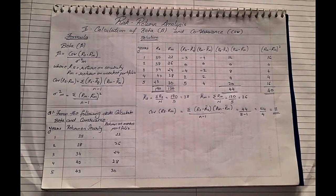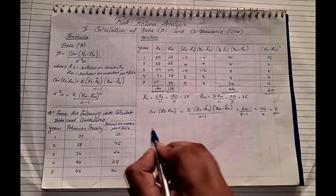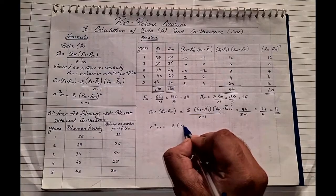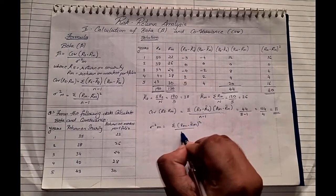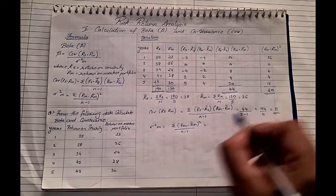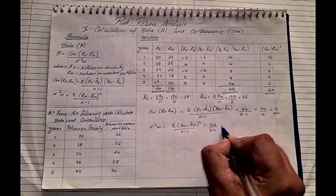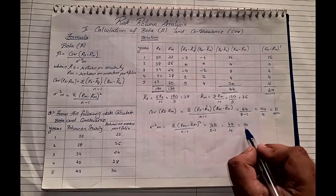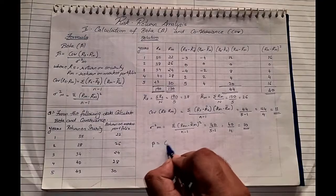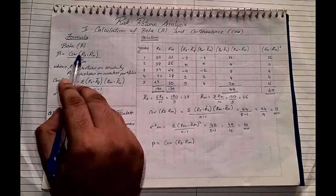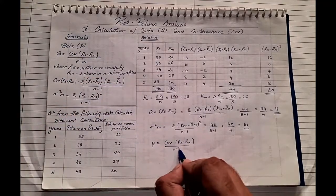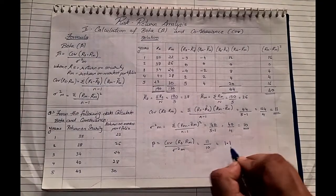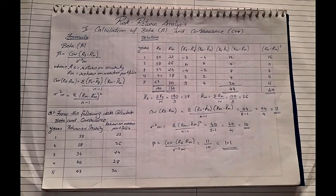Now we calculate the standard deviation squared of the market: summation of (rm minus r̄m) squared upon n minus 1. The total of that column is 40, and n minus 1 is 4, so standard deviation squared equals 40 divided by 4, which comes to 10. Now applying the final formula: beta equals covariance upon standard deviation squared of the market, which is 11 divided by 10, giving us a beta of 1.1.